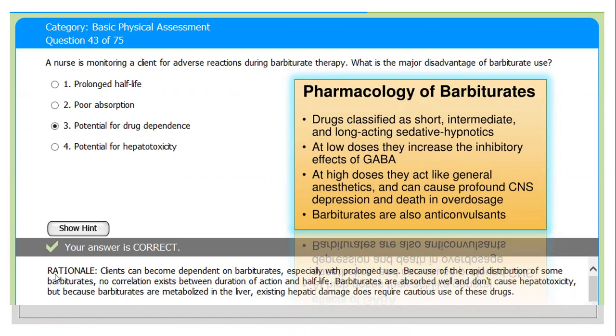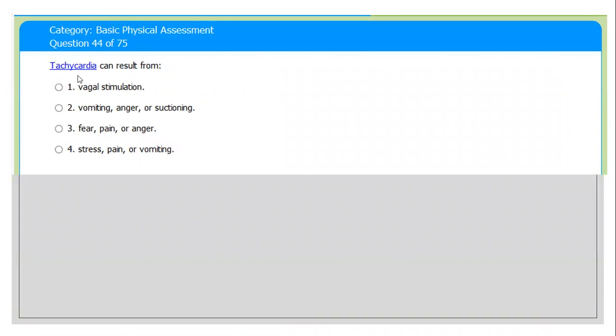Let me read the rationale. The client can become dependent on barbiturates, especially with prolonged use. Because of the rapid distribution of some barbiturates, no correlation exists between duration of action and half-life. Barbiturates are absorbed very well and do not cause hepatotoxicity. But because barbiturates are metabolized in the liver, existing hepatic damage does require caution in use.